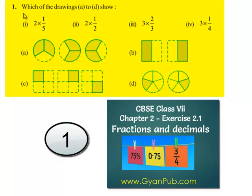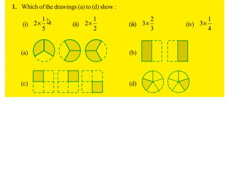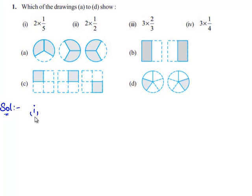Let us move on to the first question in the next exercise. Which of the drawings from A to D show the following fractions? Let us consider the first bit. We need to identify which of the following drawings from A to D show 2 times of 1 by 5.